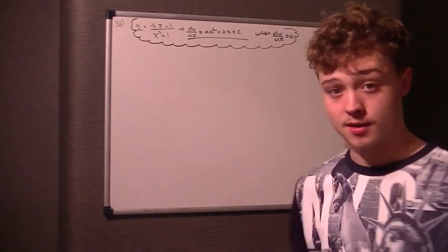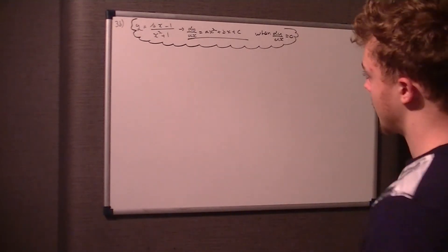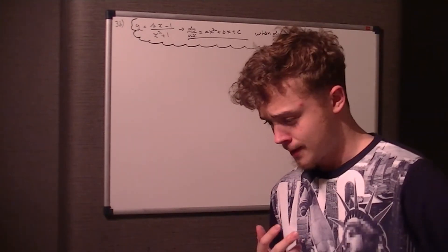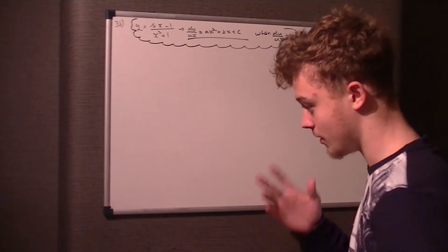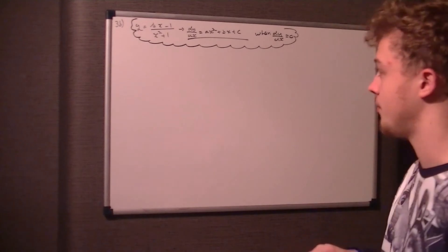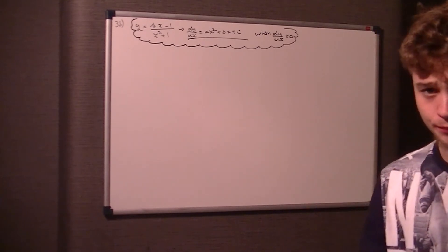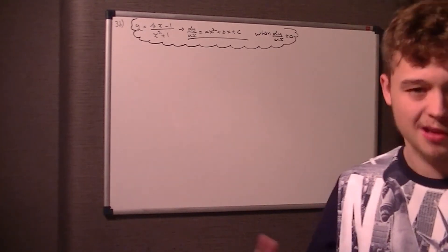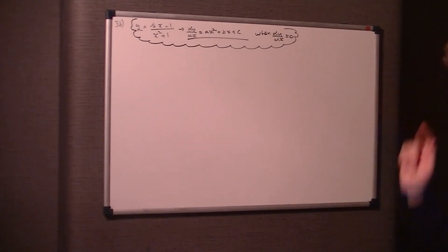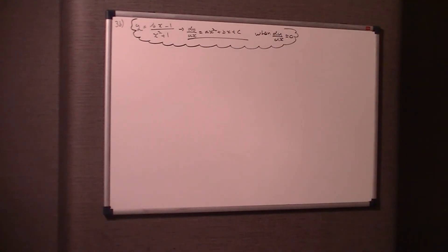We're given that y = (4x - 1)/(x² + 1), and we're told to find dy/dx in the form ax² + bx + c. It doesn't have to be all positive. Then tell what a, b, and c are when dy/dx = 0.